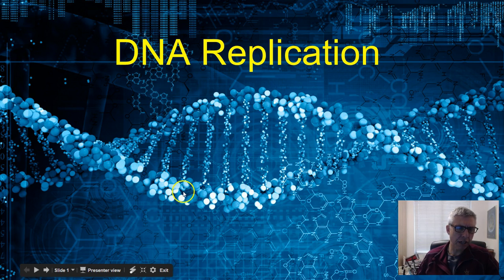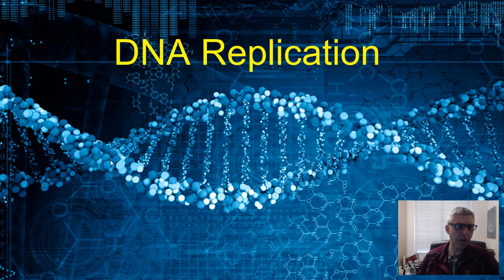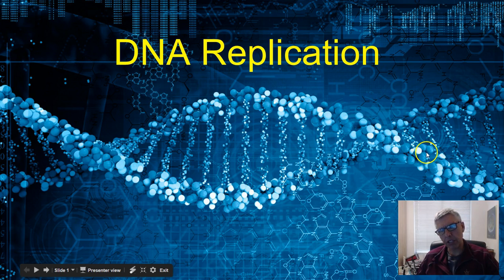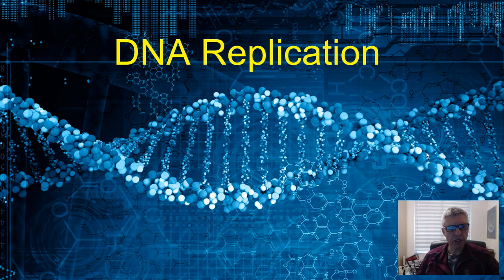On this side, if the sugars are running in a three-to-five prime direction — meaning that oxygen in the deoxyribose sugar is on the top running this way, closest to the five prime carbon, with the three prime on the bottom — then we're running three to five this way. That means the other side should be running three to five in the opposite direction. Keep those things in mind as we move forward into DNA replication.